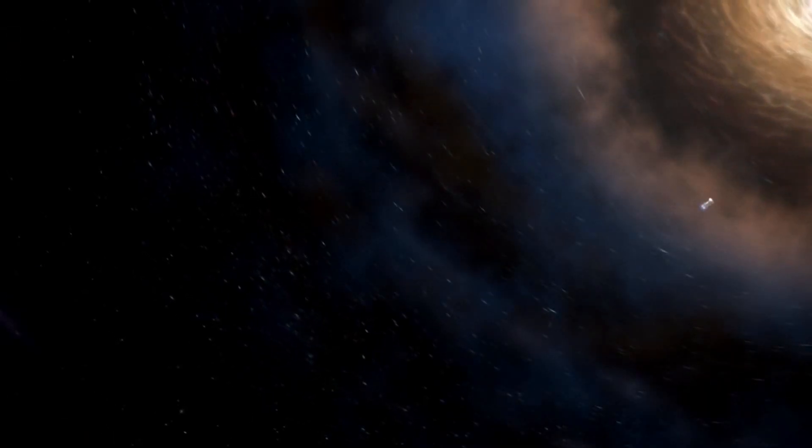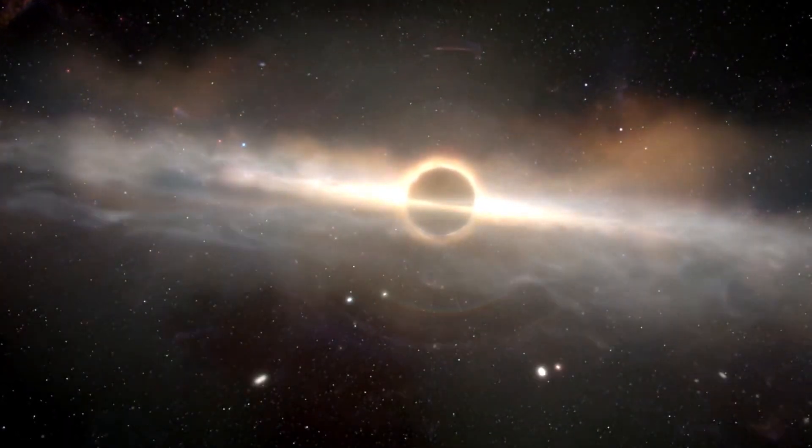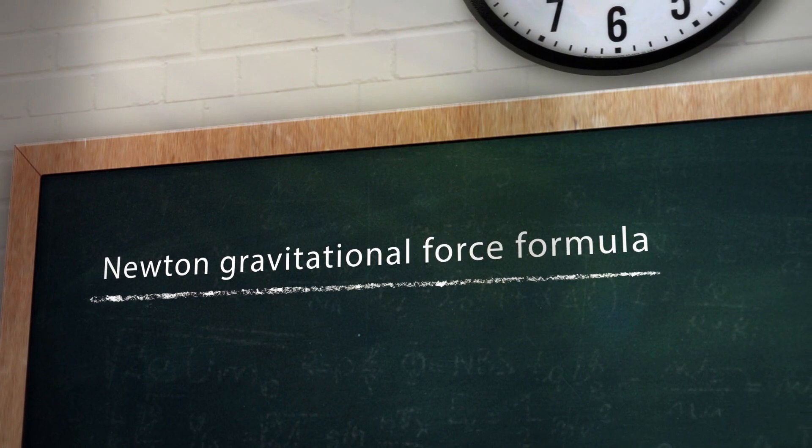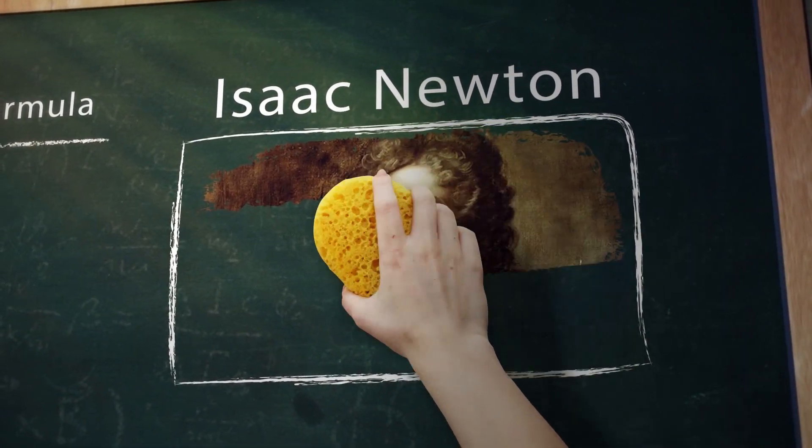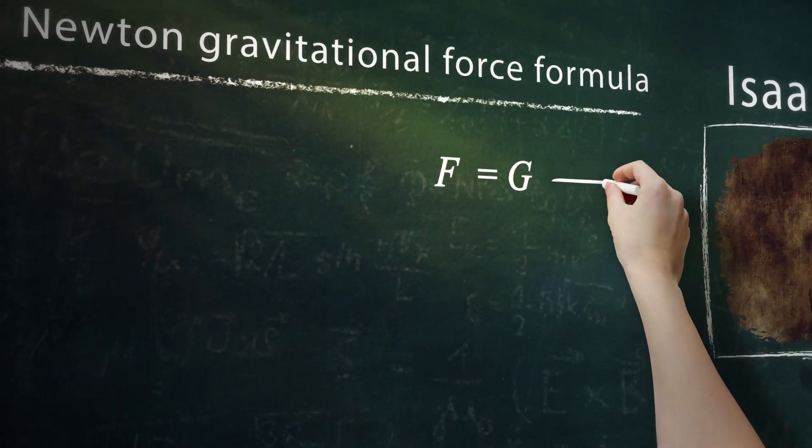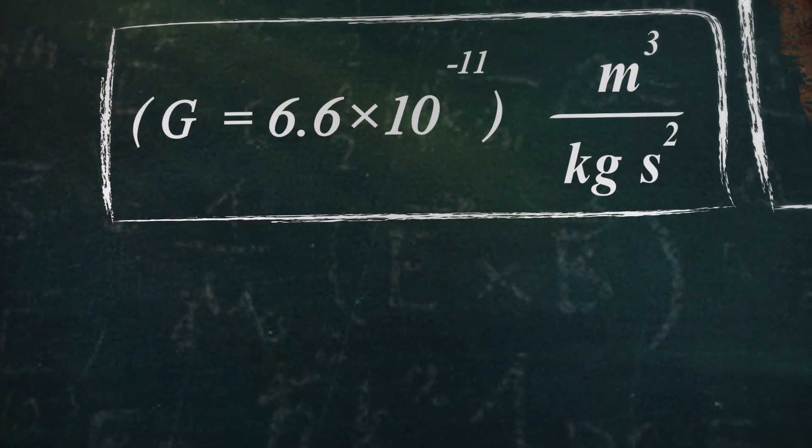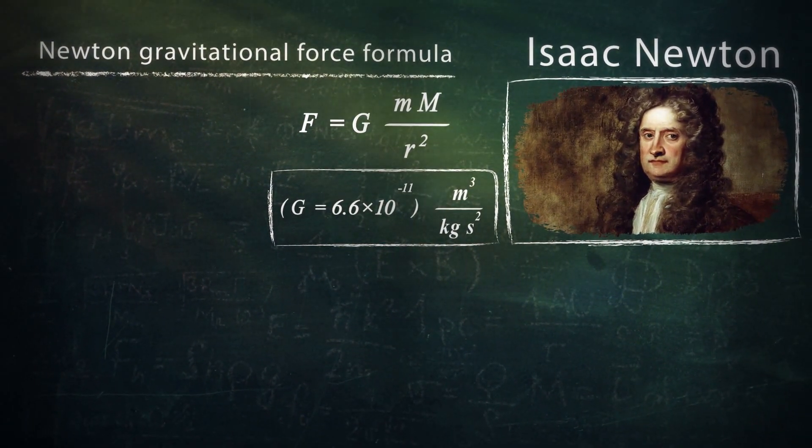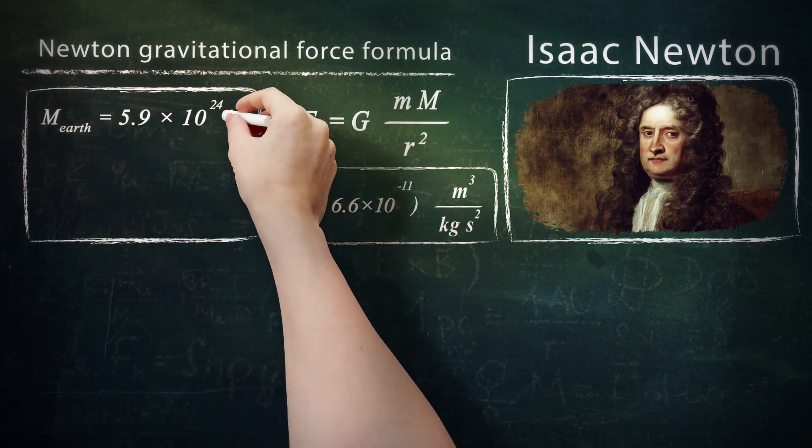Earth and the gravitational force between the black hole in the center of the Milky Way and Sun. Newtonian gravitational force is equal to. Now, we calculate the gravitational force between the sun and earth by this formula.